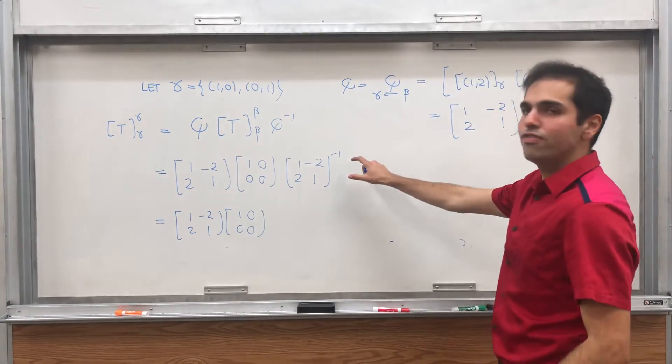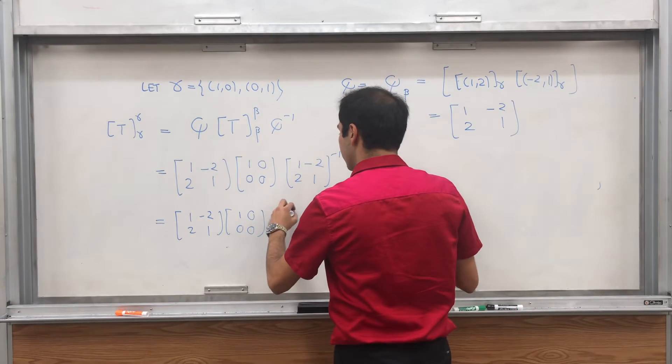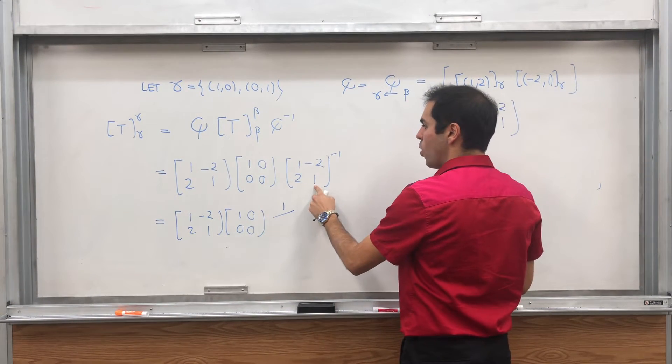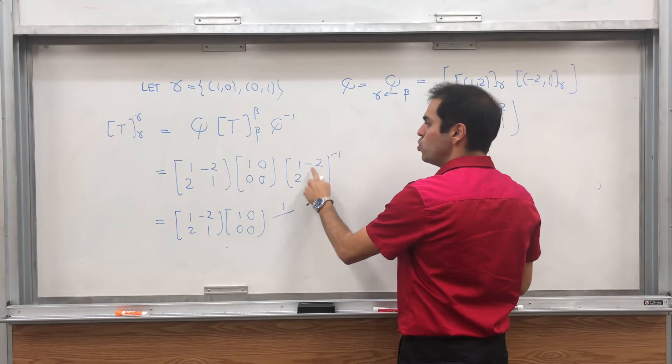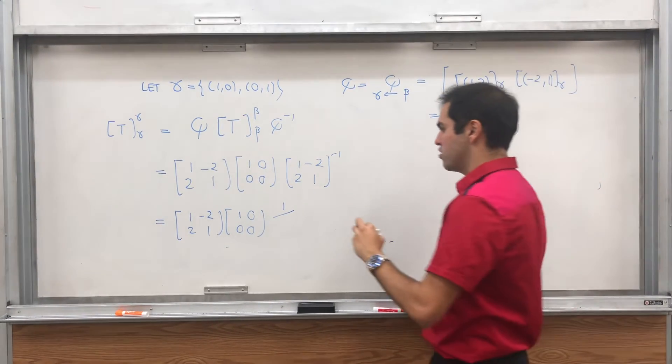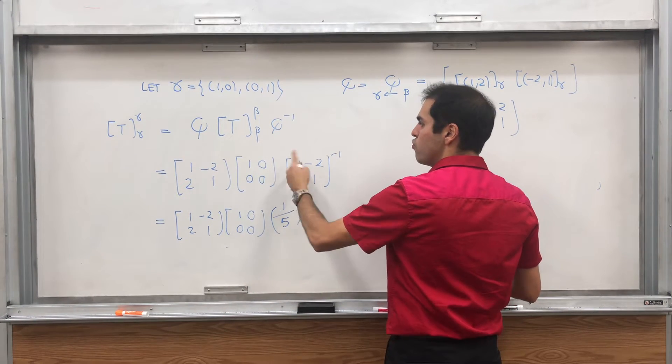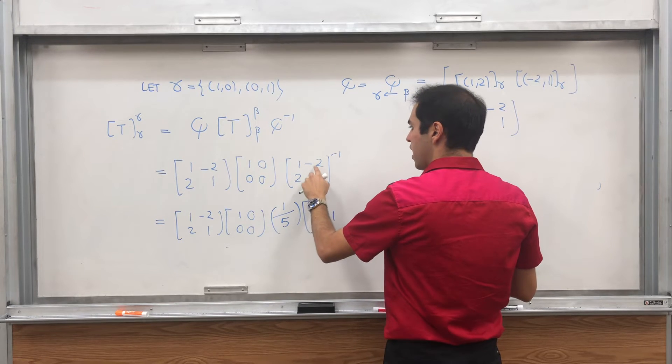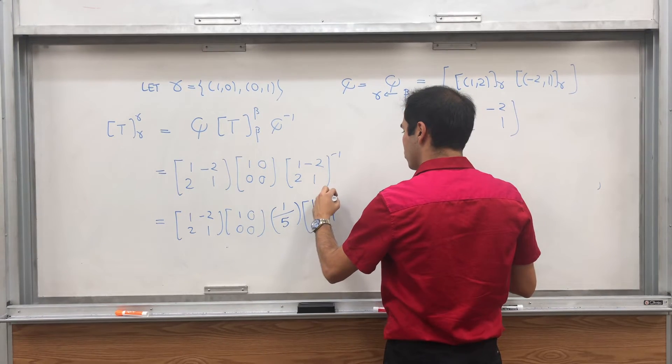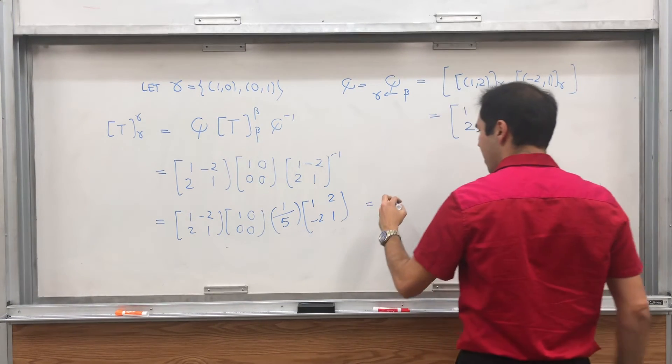The inverse of this, remember to find the inverse of a 2 by 2 matrix, you get 1 over the determinant, which is 1 minus 2 times minus 2, which is 1 plus 4, which is 5, so 1 fifth. And then to find the inverse, you flip those two values, and you take negative of those two values, 2, minus 2.